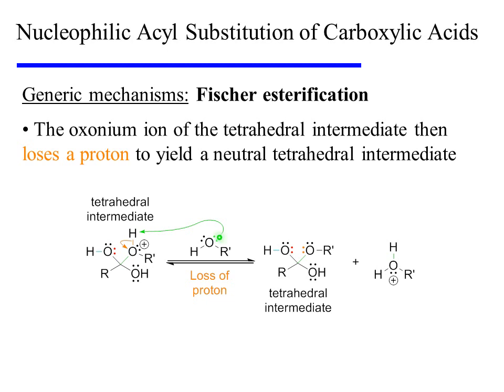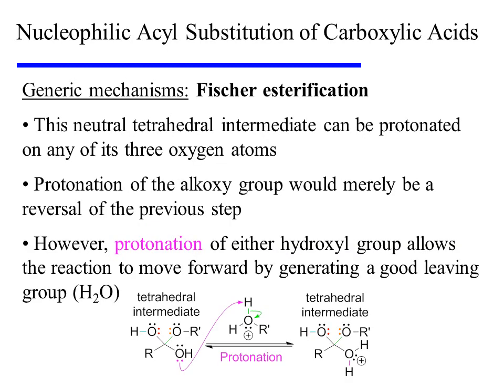The oxonium ion of the tetrahedral intermediate then loses a proton in order to yield a neutral tetrahedral intermediate. This neutral tetrahedral intermediate can then be protonated on any of its three oxygen atoms. However, protonation of the alkoxy group would merely be a reversal of the previous step. Instead, protonation of either hydroxyl group allows the reaction to move forward by generating a good leaving group — in this case, water.